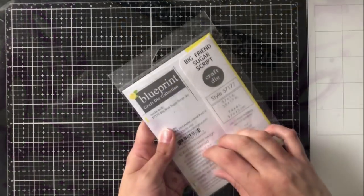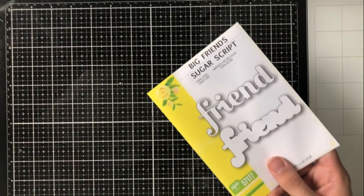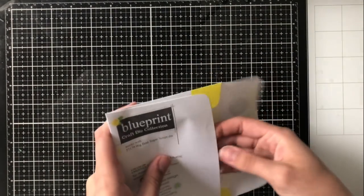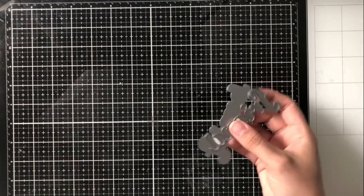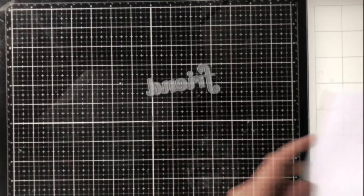So now I'm going to go ahead and start on my next two cards. I'm going to be using the big friends sugar script die for this. And this comes with the actual word die and the shadow die, but I'll only be using the word die for today's cards.